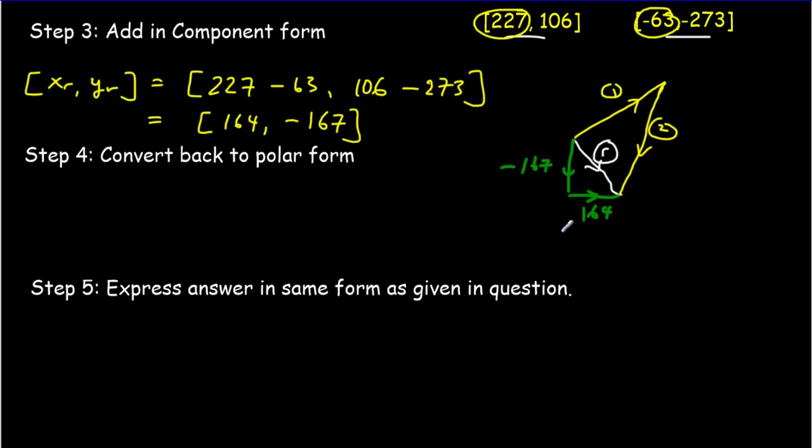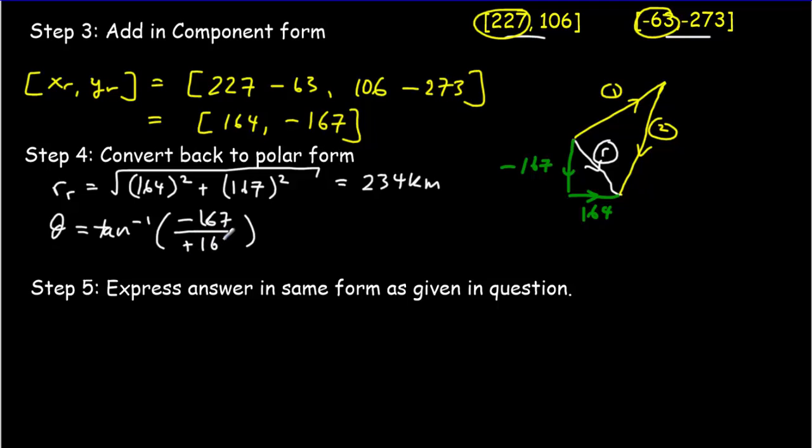So what we'd now like to do is convert back to polar form. So we want to work out that resultant vector in polar form. The length of my resultant vector will be equal to the square root of 164 squared plus negative 167 all squared. I don't really need to put in the negative sign because it's going to be squared anyways. If I work that out, I should get 234 kilometers. In other words, the length of that vector is 234. To get the angle, it's going to be the inverse tan of y over x. That would be negative 167 divided by positive 164. And notice here that x is greater than 0. So you don't need to add 180 degrees to your result. Plug that into your calculator and you should get an answer of negative 46 degrees. In other words, this angle here coming down to our resultant vector is going to be 46 degrees. And because it's clockwise, that would be negative 46 degrees.